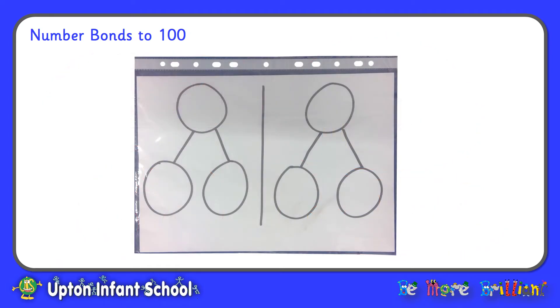And so on to number bonds to 100. And if you've been practicing your number bonds to 10, that's really going to help you to find your number bonds to 100. Now here I'm using my two part-part-whole diagrams on my piece of paper inside my poly pocket. So on the left I'm going to start with my number bonds to 10.